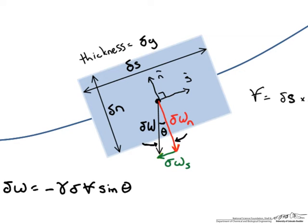Just because of the way we have drawn our axes, we have this contribution acting in the negative direction. Thus if the streamline is horizontal and theta is zero, the weight component in the streamline direction is also zero. So term one, the weight term, can be rewritten as such.